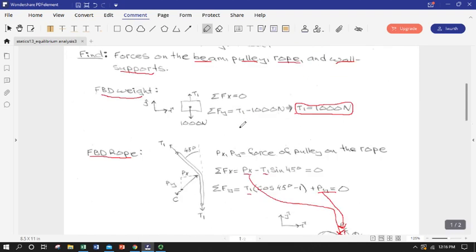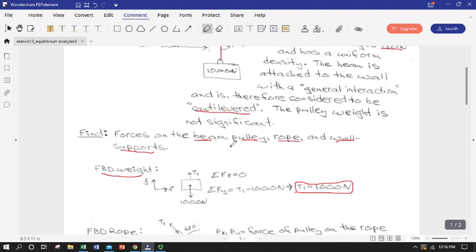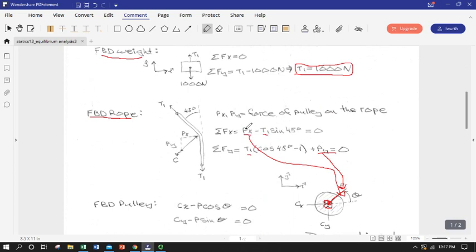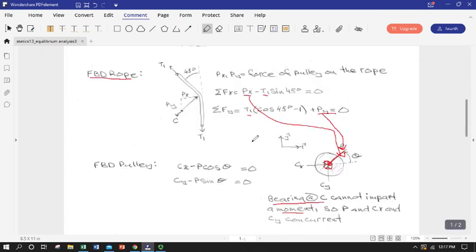So let's tally up equations and make sure we have enough for the unknowns. Obviously, we had enough here. We solved directly for T1. Down here, we have T1 becomes a known in the next FBD set of equations of equilibrium. And then we have PX and PY that we don't know. We can solve for those with our two equations. So we could definitely get those. And if we have P sub X and P sub Y, we can use Pythagorean to get the total magnitude of P.